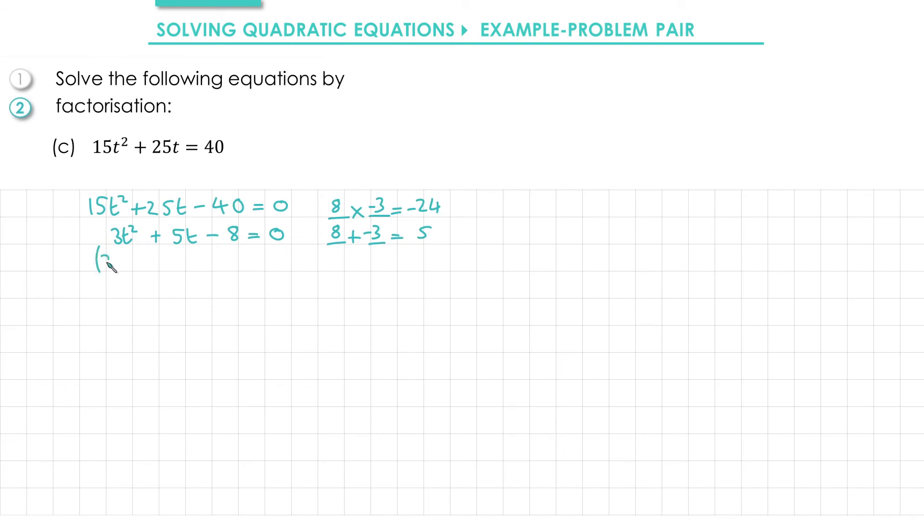So I'm going to have a pair of brackets with 3t inside them. And then the two numbers I've found here, positive 8 and negative 3, go inside the brackets. However the 3t - 3 bracket has a common factor of 3 which we'll divide by. That gives us t - 1.